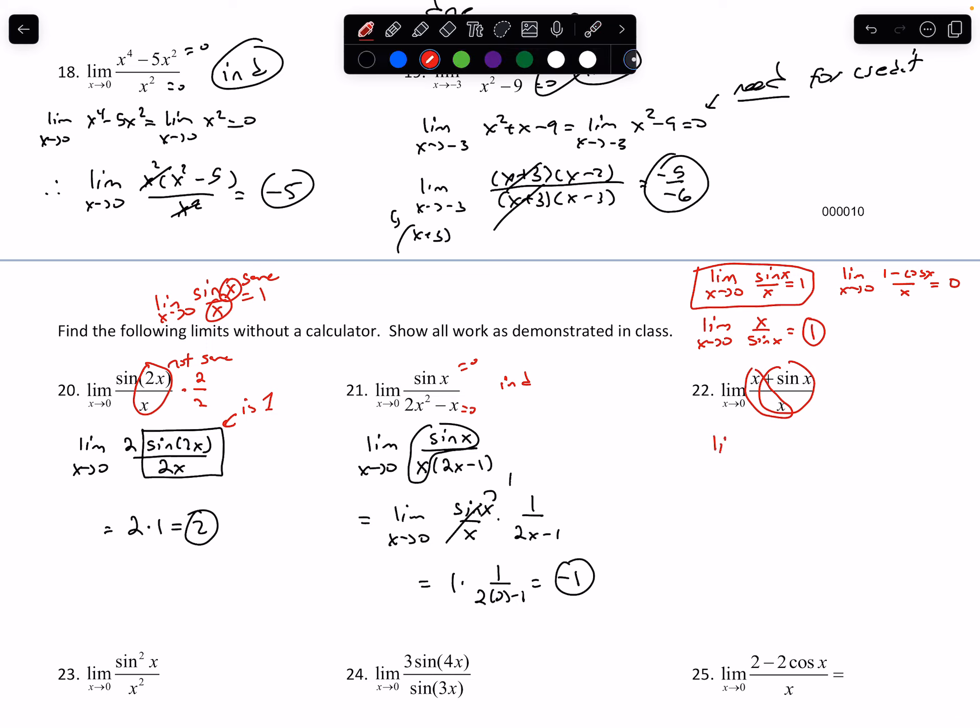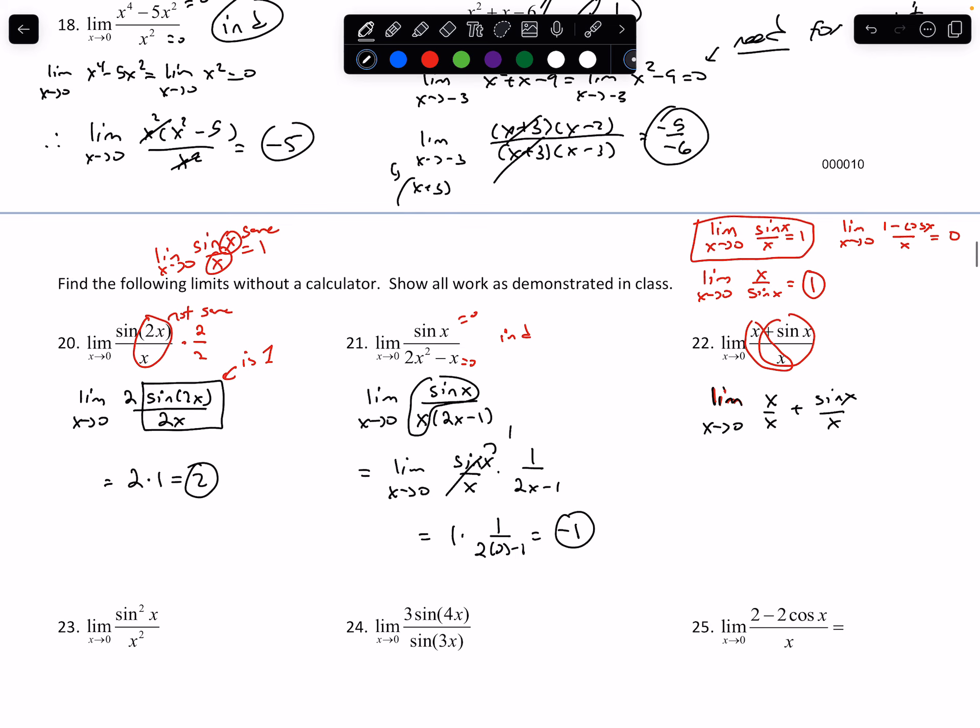So I can rewrite this as the limit. Let me write this in black, like the color of my soul. The limit as x approaches 0, x over x plus sine of x over x. And same thing, I can simplify this a little bit more if I wanted to. x over x is 1 plus, and that becomes just 1. And we get 2. This is our rule right there. Very simple.